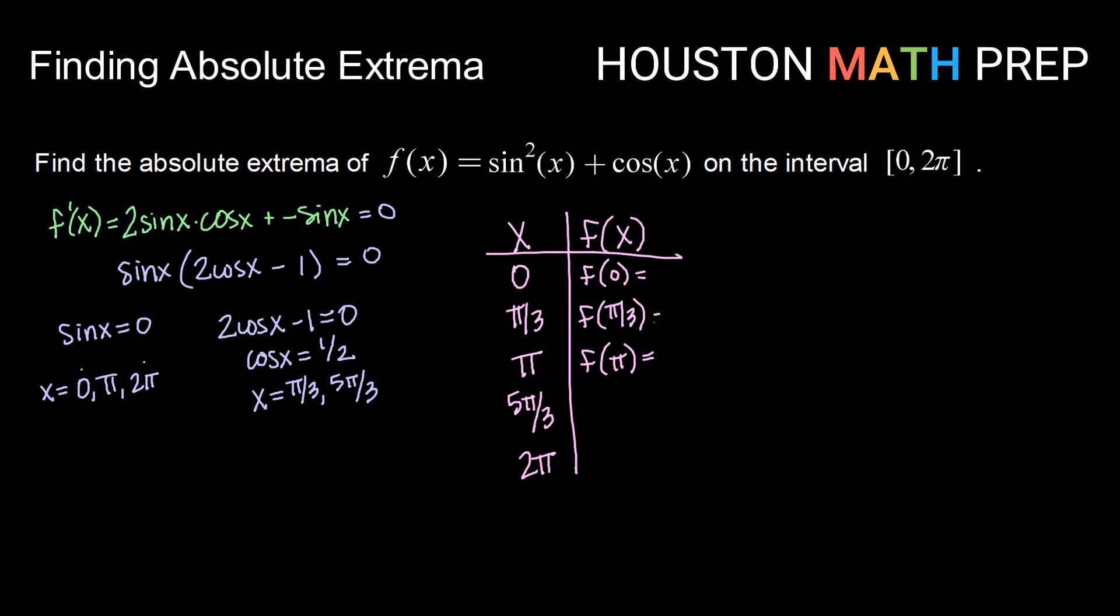Now remember we're getting our y values by taking each one of these and evaluating them in the original function, not our derivative. So plugging these in, we get f of 0 is 1, f of pi over 3 is 5 over 4, f of pi is negative 1, f of 5 pi over 3 is also 5 over 4, and of course because 0 and 2 pi give us the same values for trig functions, f of 2 pi will be 1.